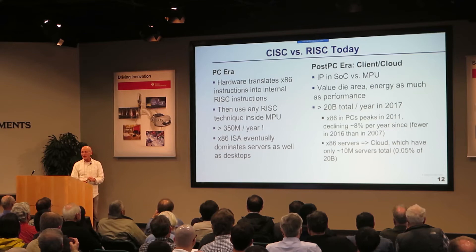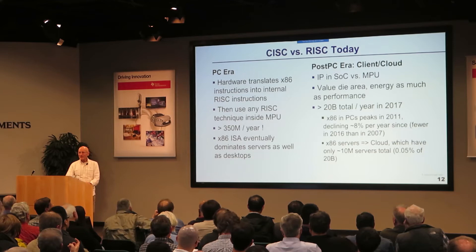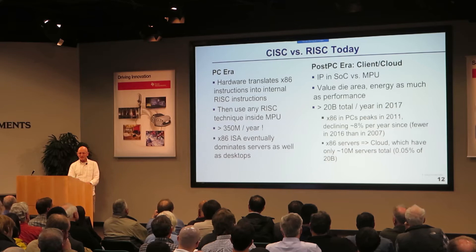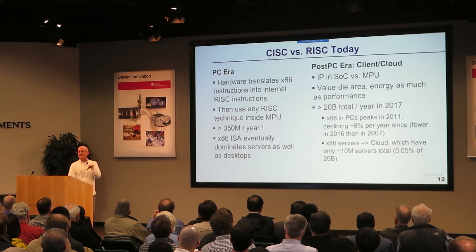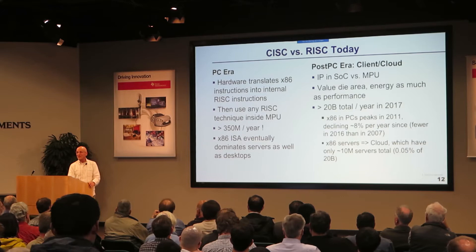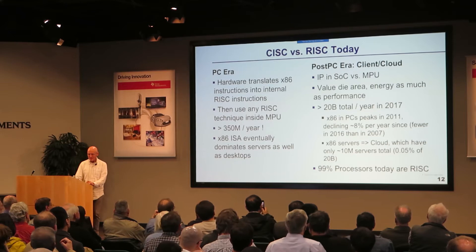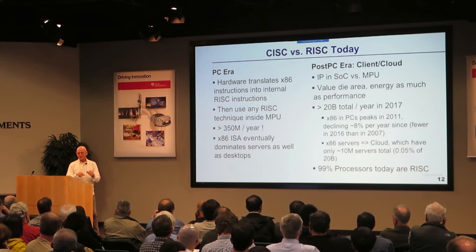PCs are dwindling in the post-PC era, dropping at about 8% per year in sales. Mobile phones are up and to the right. Amazingly, last year there were 20 billion 32-bit microprocessors sold — almost all RISC processors. x86 still dominates the servers in the cloud, but there are only an estimated 10 million servers there — not that many chips. Today, 99% of the processors made are RISC processors. ARM alone has shipped 100 billion chips with RISC processors. RISC won the second war.